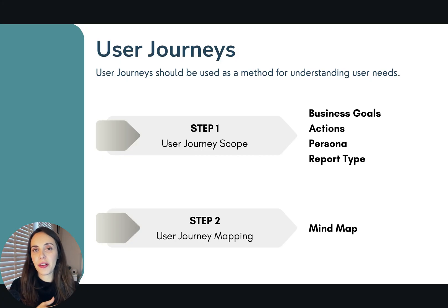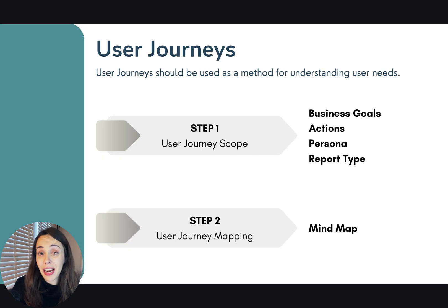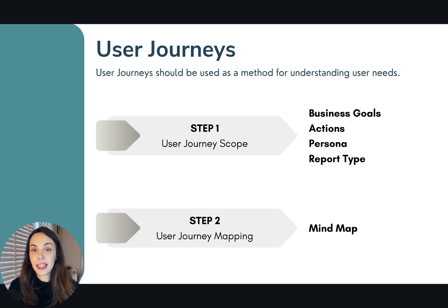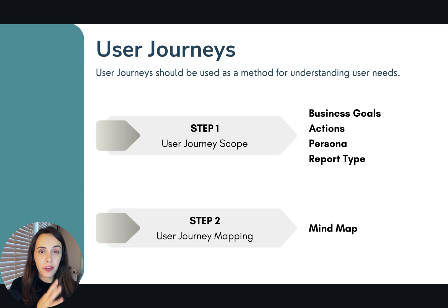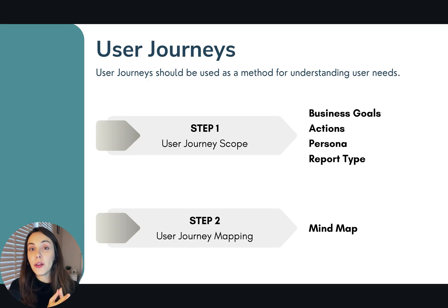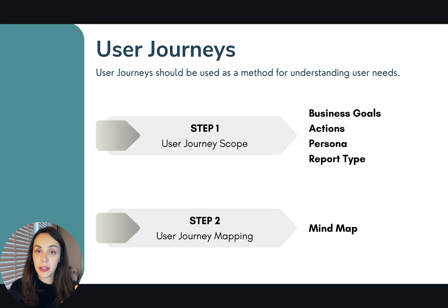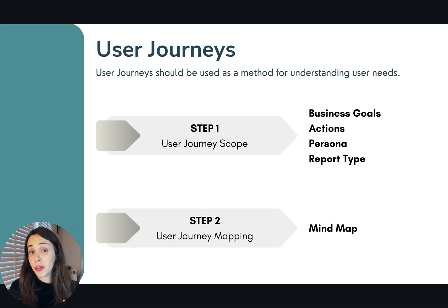The main idea to retain here is that your user journey in reality starts with the business goals. You need to make sure that those business goals are achieved and that you provide enough insights and information to your end users so that they can take actions to meet those goals. To define the user journey scope, the things we will need are the business goals, the actions, the user personas, and the report type.